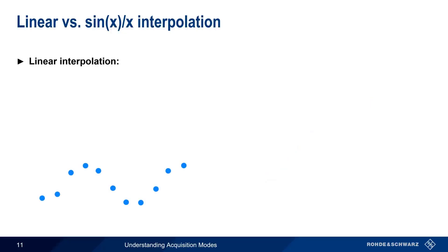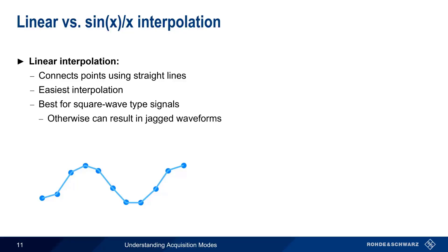A linear interpolation connects the waveform points using straight lines. It's a very easy interpolation to implement and generally works best on square wave type signals. Using a linear interpolation on other types of signals may result in a somewhat jagged waveform.